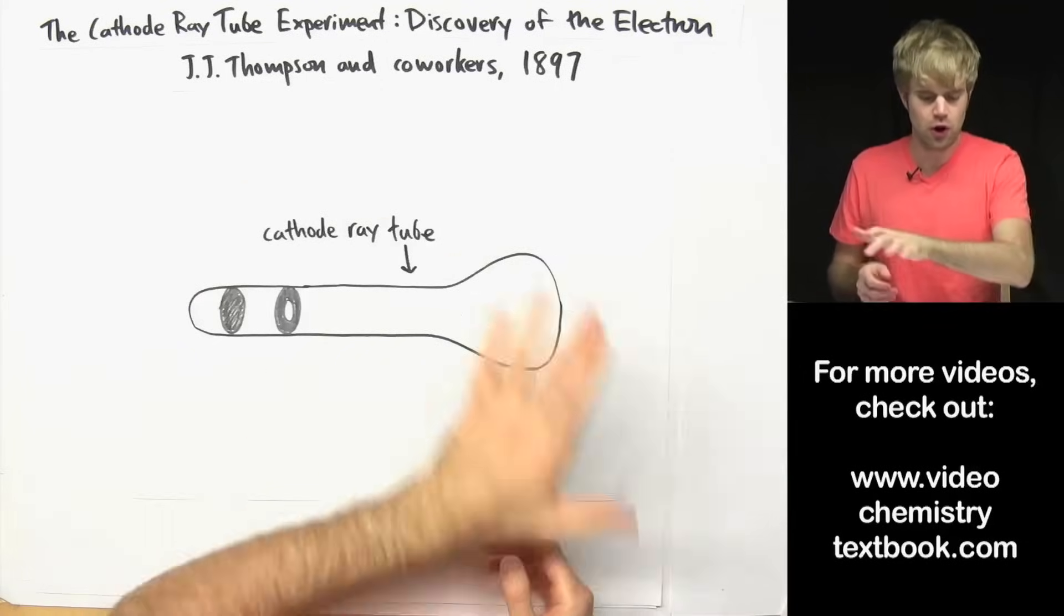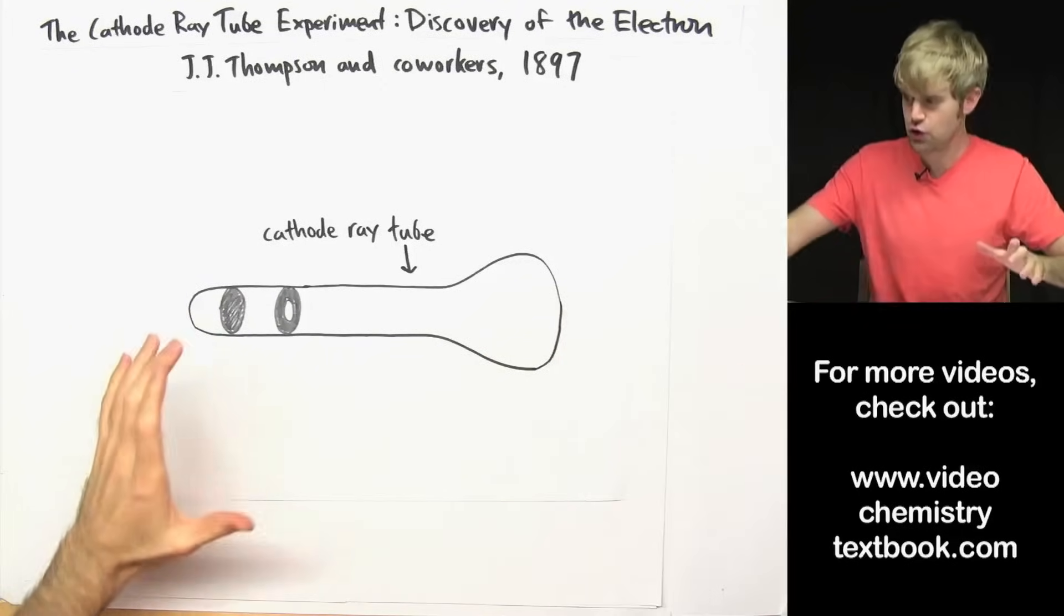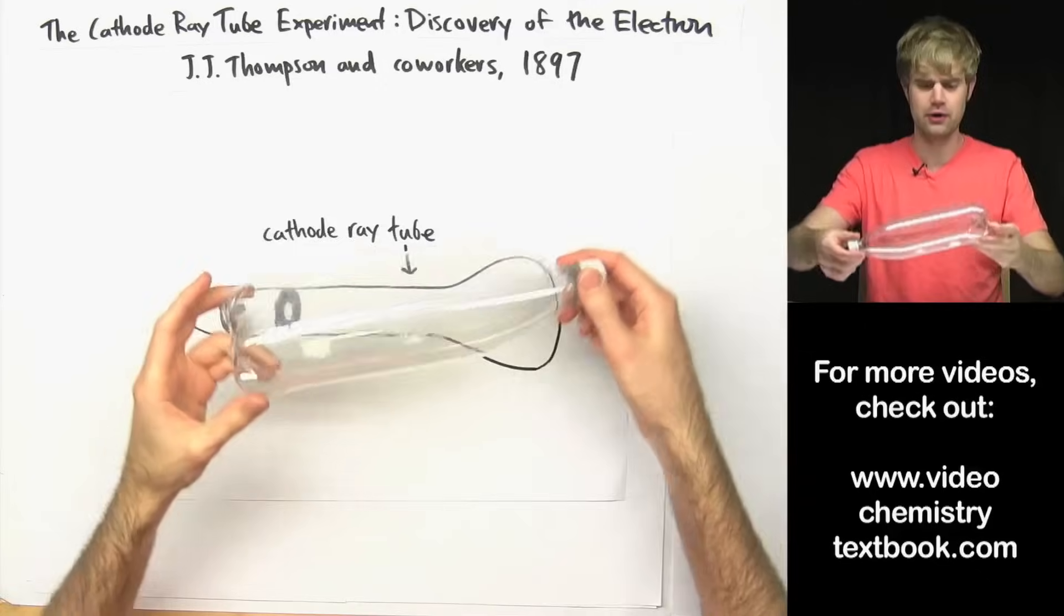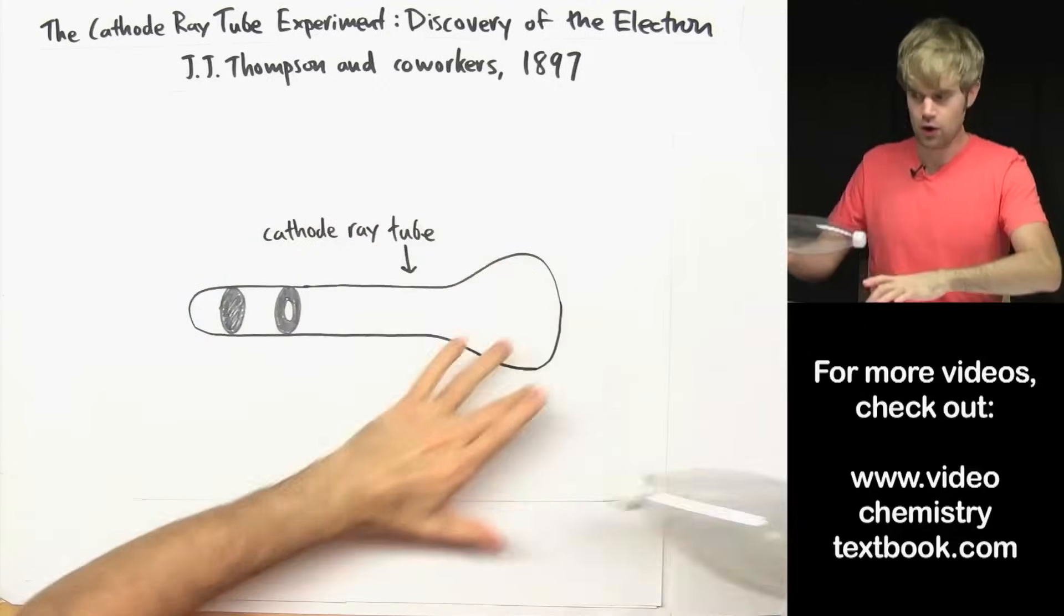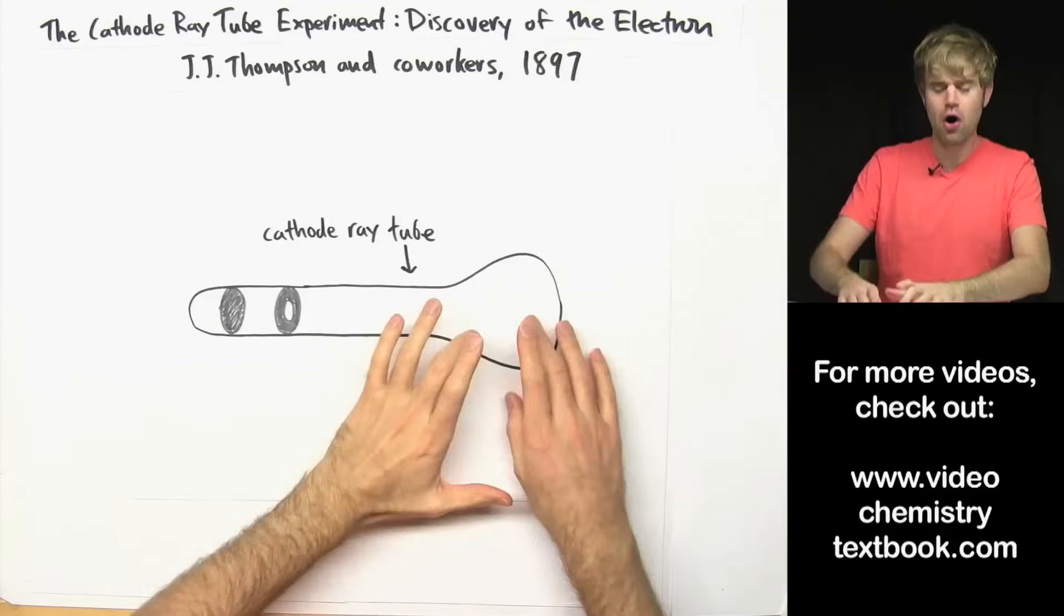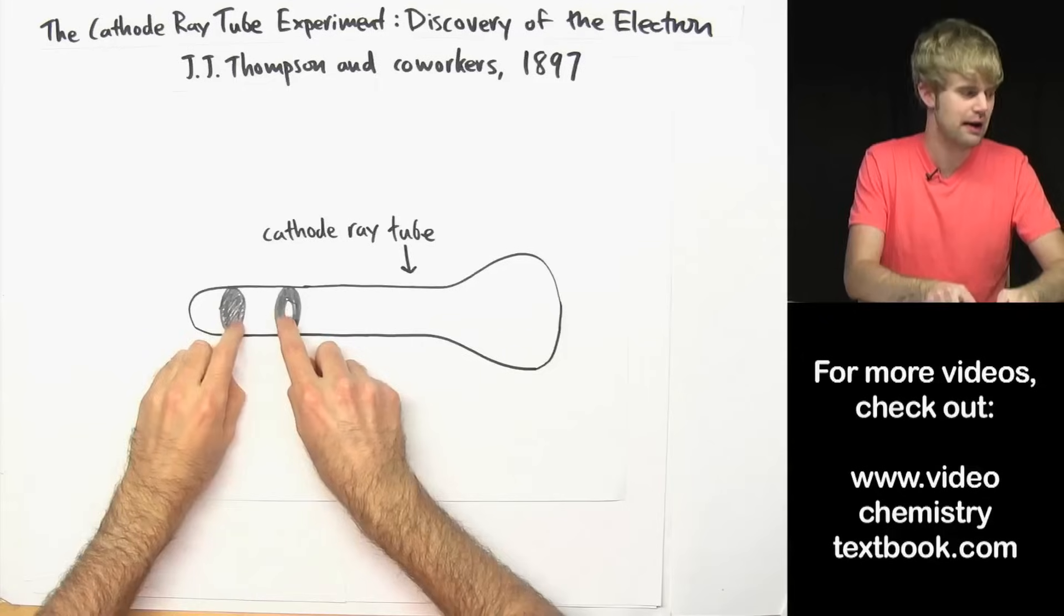So Thompson used what's called a cathode ray tube. It's a big tube of glass that's kind of like a bottle. You can imagine it's sort of like this soda bottle. It's sealed all over and then you pump all the air out of it. And it has these two pieces of metal at this end.